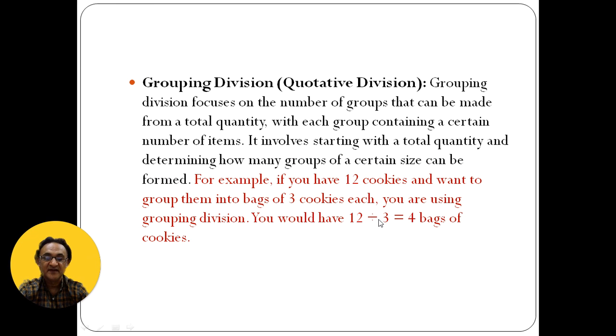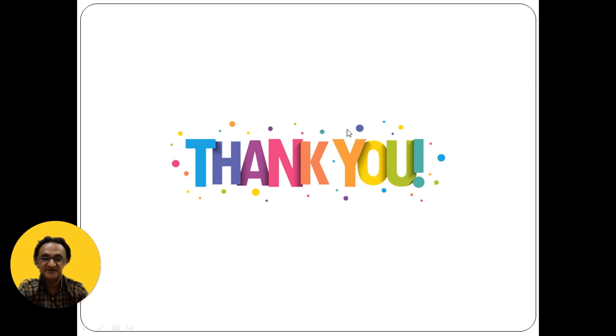Another method: if you have twelve cookies and want three cookies in each bag, you are using grouping division. You would have twelve divided by three, which equals four bags. This is a good example to understand that grouping division is also called quantitative division.